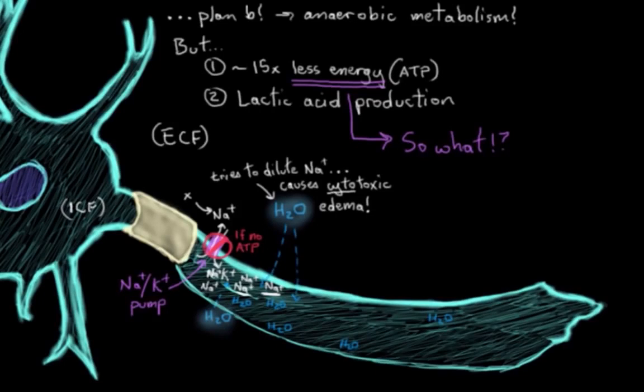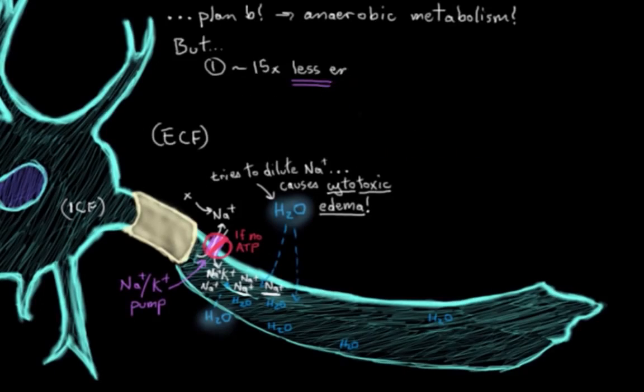And this situation is called cytotoxic edema. Cyto referring to our cell here. Toxic because it can kill the cell. And edema meaning swelling. And this happens early. This is one of the earliest things that happens when there's not enough energy around.